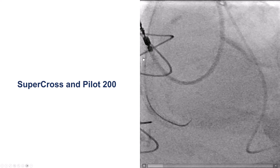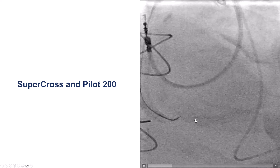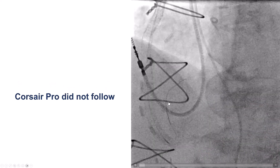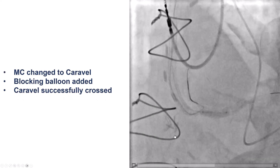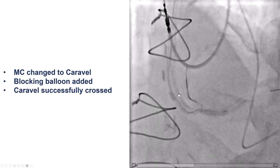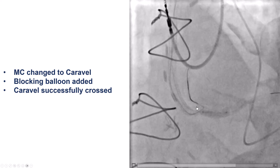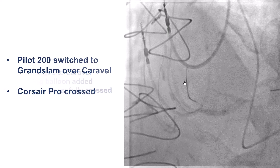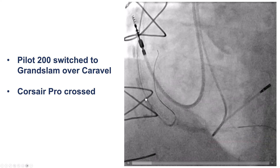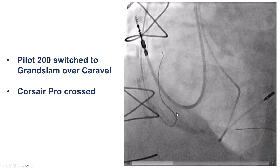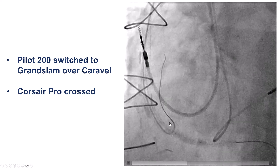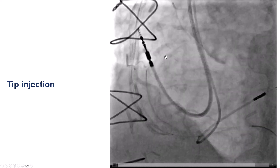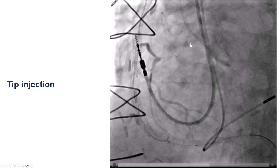Similar to the previous attempt, we went retrograde through the saphenous vein graft. We used an angulated Supercross microcatheter, but had difficulty advancing the retrograde equipment because of the previously placed stents. Eventually we were able to use a blocking balloon, switched to a Caravel microcatheter, and advanced the retrograde microcatheter into the mid-right coronary artery. We then delivered a more supportive Corsair Pro microcatheter retrogradely. We still had some length of patent vessel until the ostial occlusion.